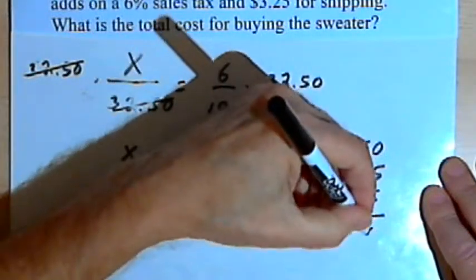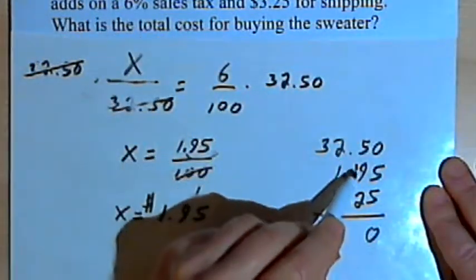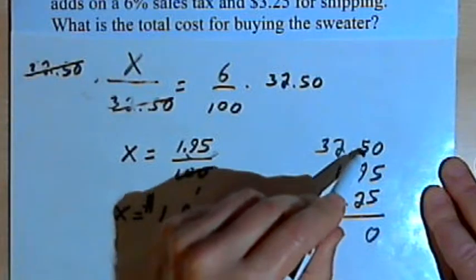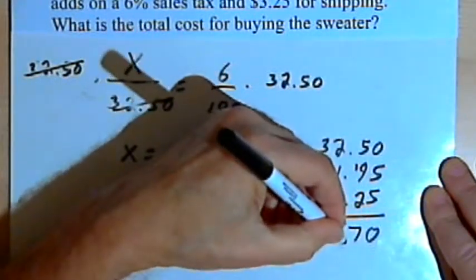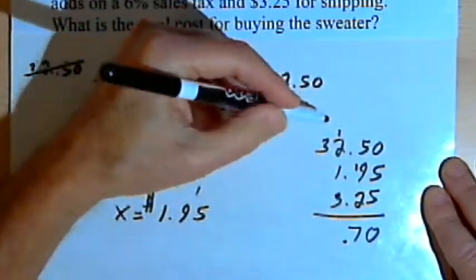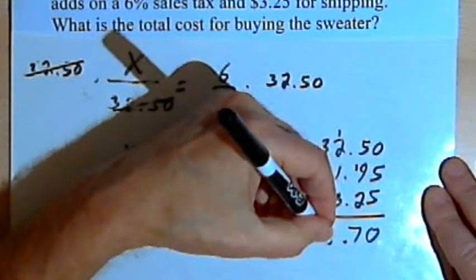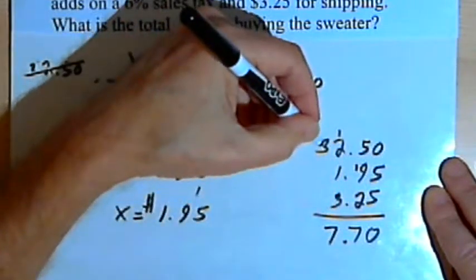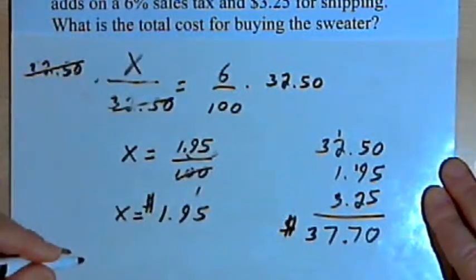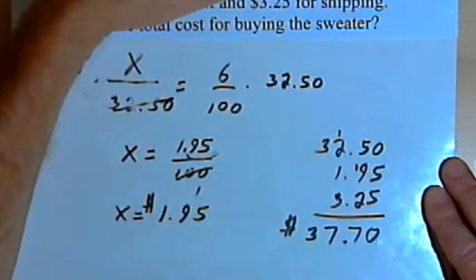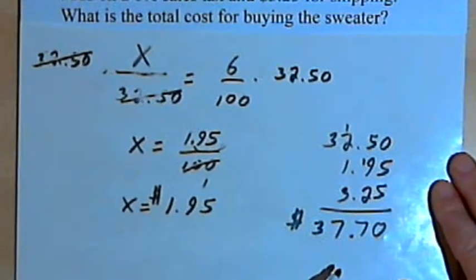So 5 plus 5 is 10. I'll write the 0 and carry a 1. I'm going to add that 1 to the 9 that's over here to make 10. 5 more is 15 and 2 more is 17. So I'll write the 7, add a 1 that I'm carrying. 1 plus 2 is 3, plus 1 more is 4, plus 3 more is 7. I've got 3 in the next column. I'll bring that down. And the total cost for the sweater, the sweater plus the sales tax plus the shipping, is going to be $37.70.